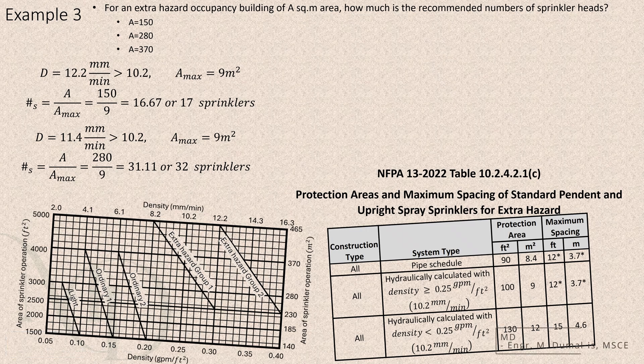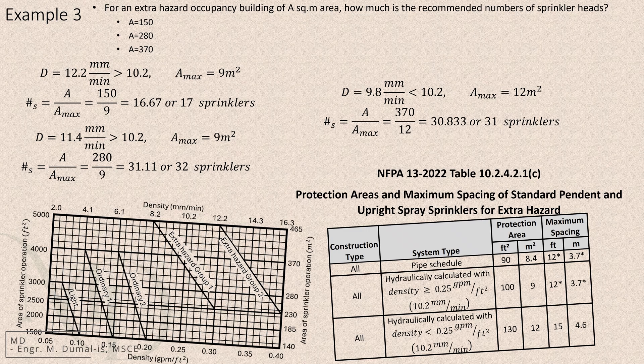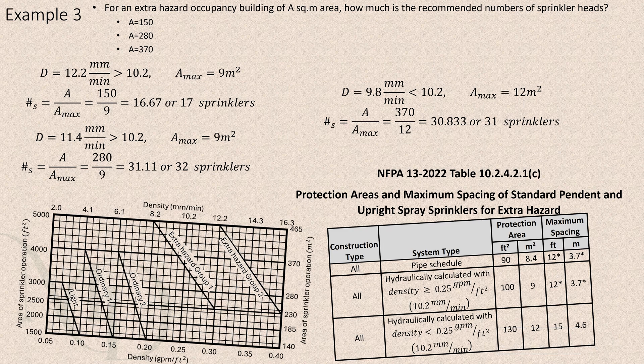For the third case, the total area is 370 square meters. Matching this on the curve gives a density of 9.8 millimeters per minute, which again corresponds to a maximum area per sprinkler of 12 square meters. Dividing 370 by 12 gives us around 31 sprinklers.